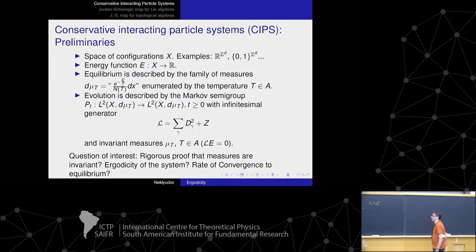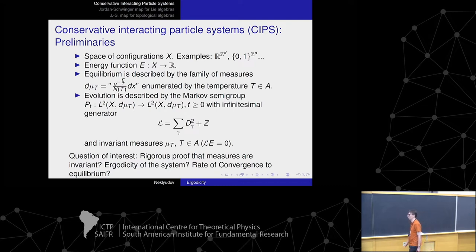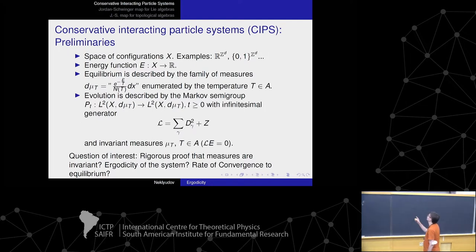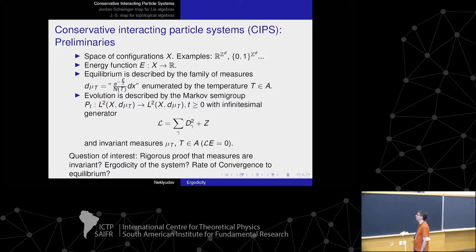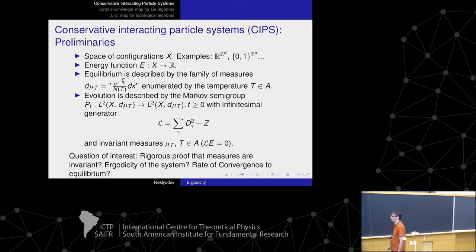Informally speaking, we assume that equilibrium is described by the family of measures which physicists call Gibbs measures — the exponent of minus energy over temperature divided by some normalizing constant. Evolution is described by some Markov semi-group with infinitesimal generator L. The questions of interest are: rigorous proof that the measures are invariant, ergodicity (convergence of the system as time goes to infinity to the invariant measure), and the rate of convergence.